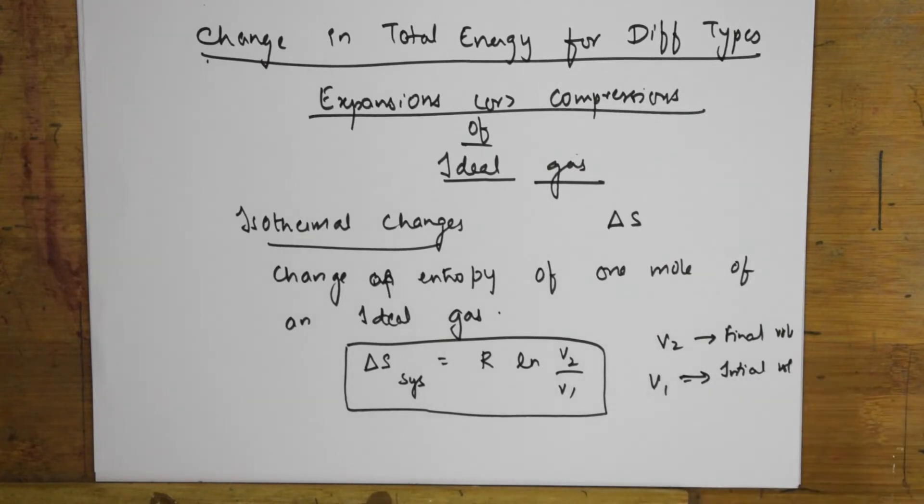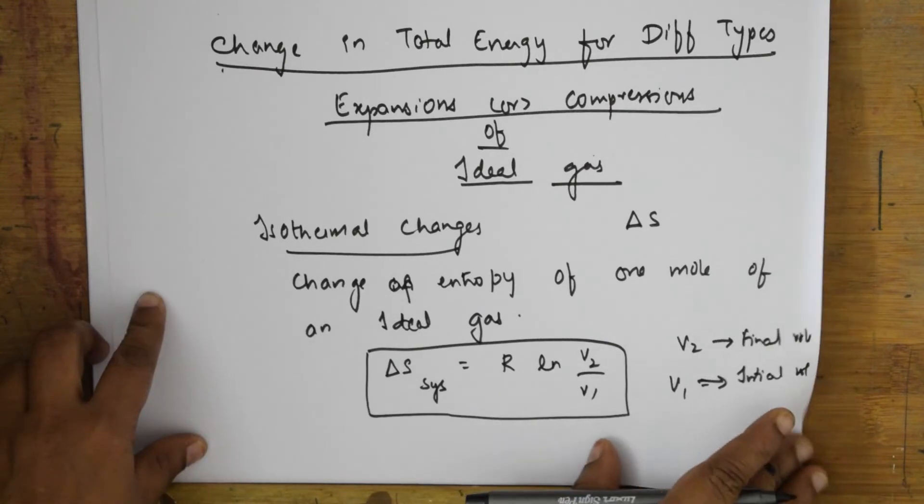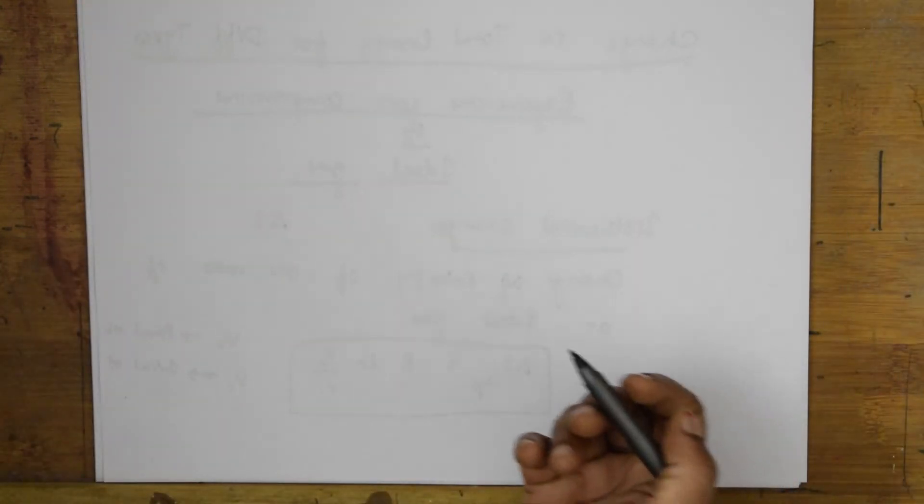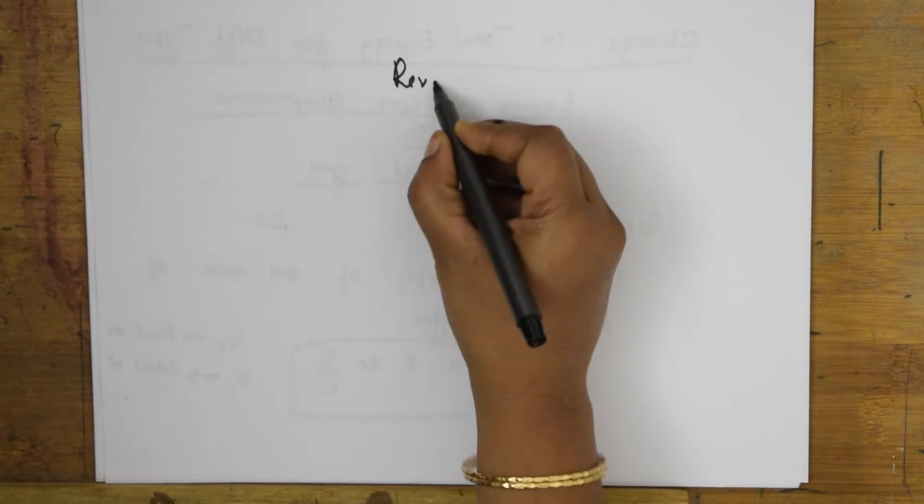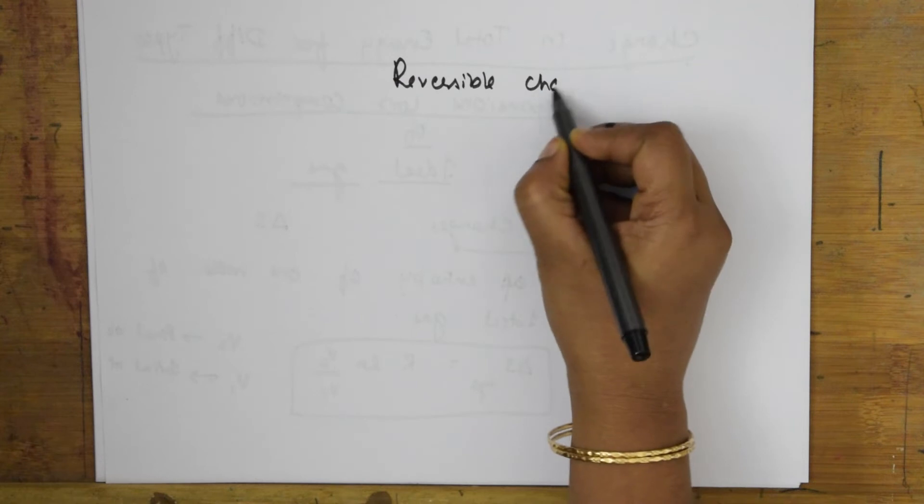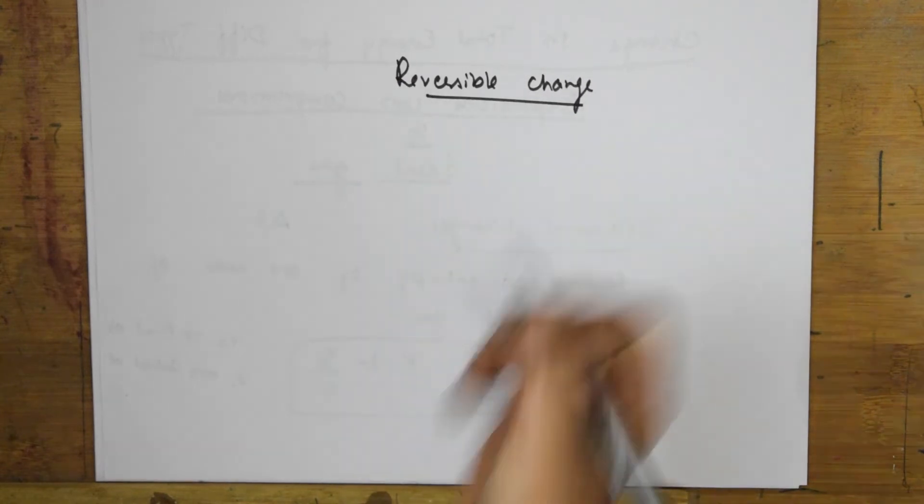Final volume, initial volume. Now we will start calculating the same for the reversible as well as irreversible changes. Let's start. Suppose if I have to take the same formula, now I'll start calculating for reversible change.